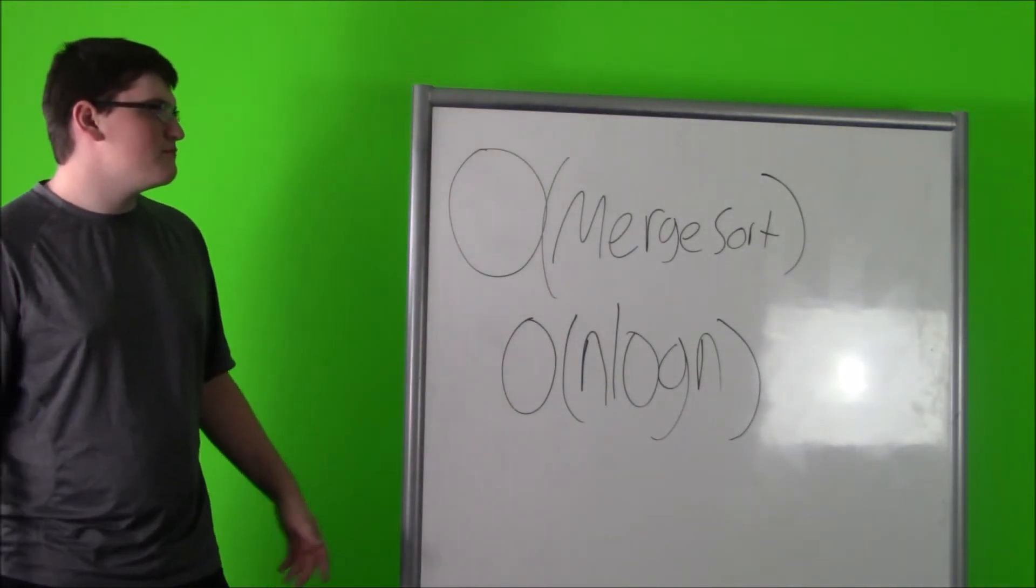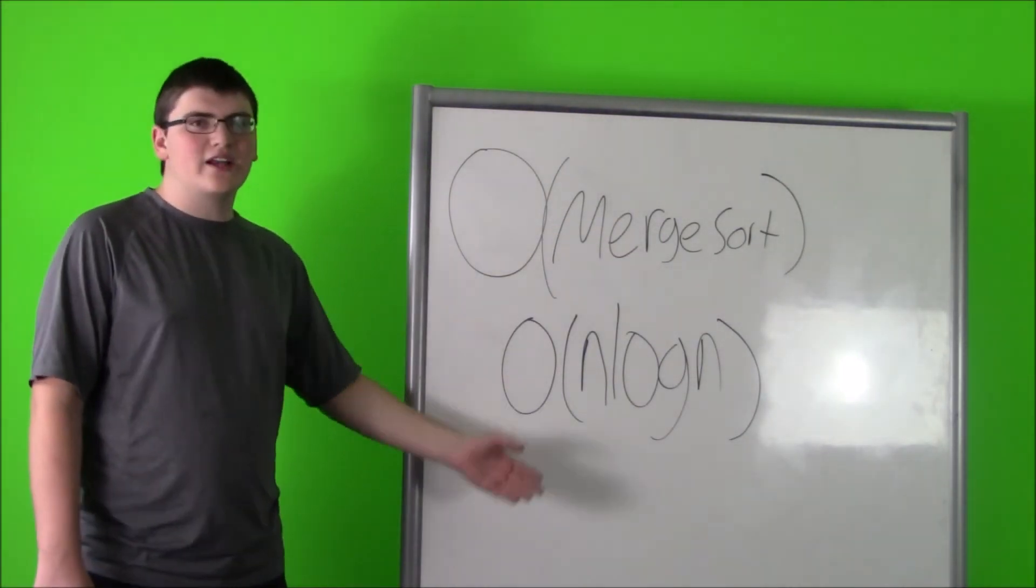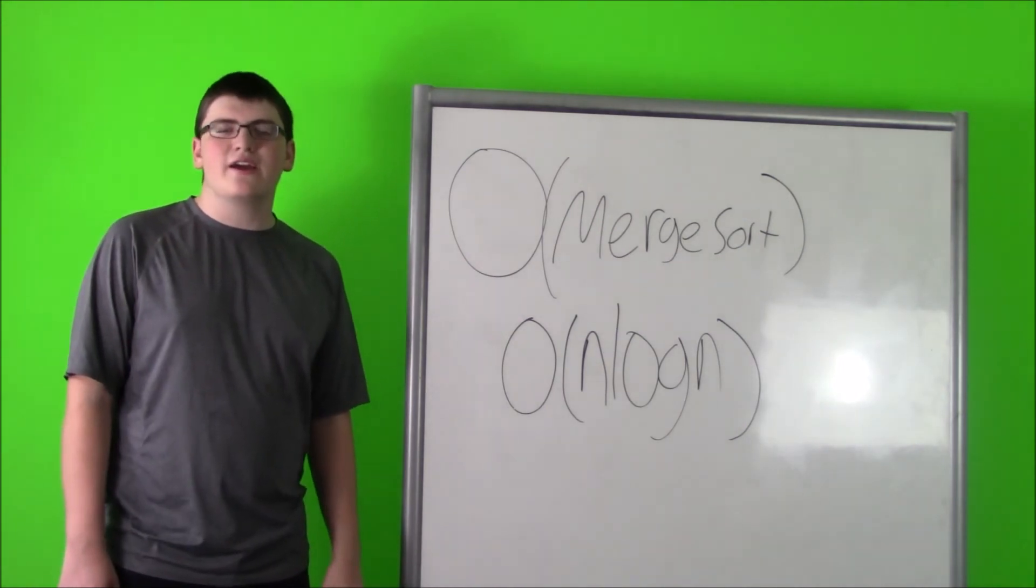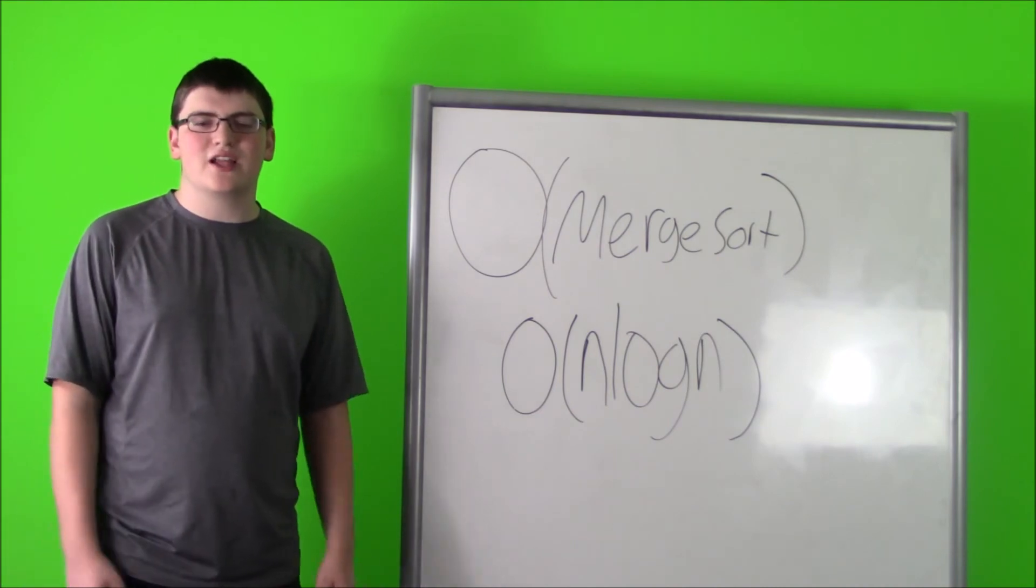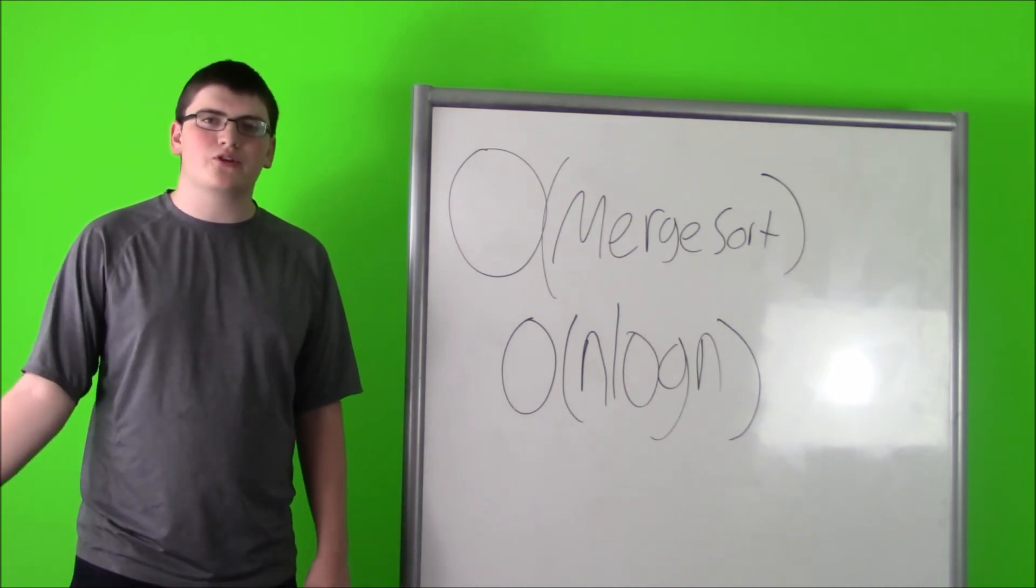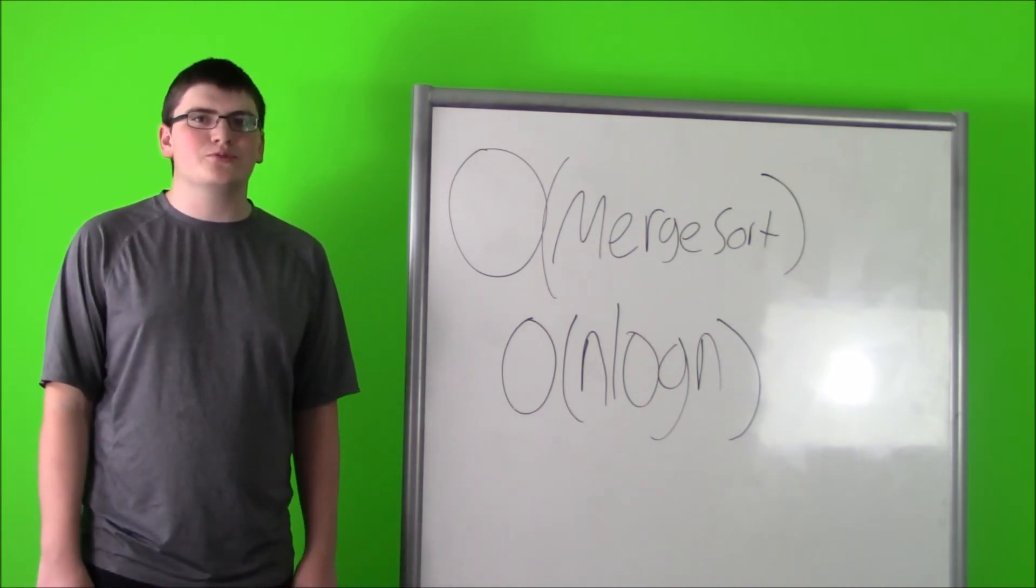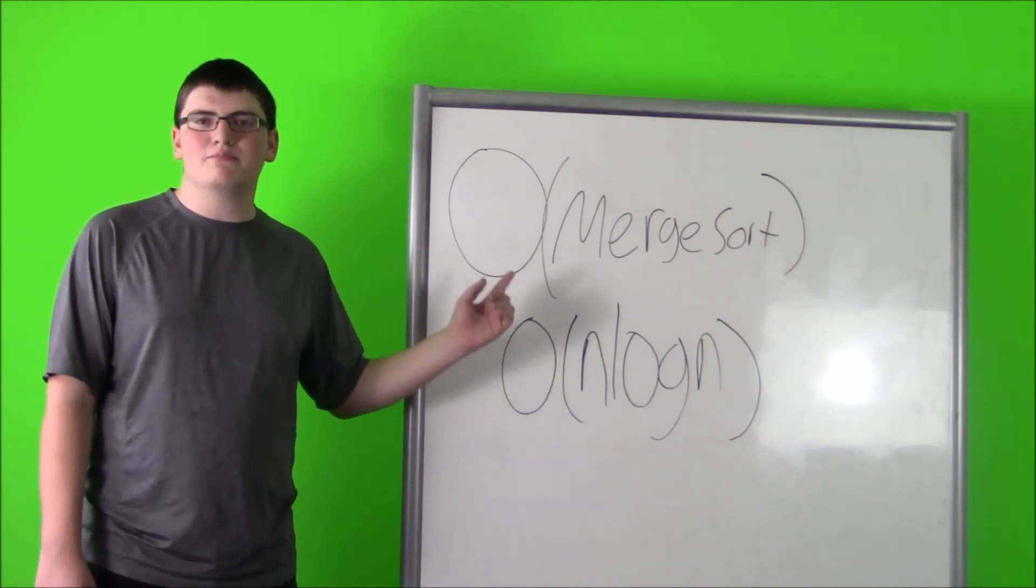The Big O of merge sort is n log n, which is considerably shorter than n squared. When doing big complex searches, like if you're using a NASA supercomputer or building an online game, you'll want to use merge sort instead of bubble sort.